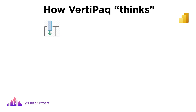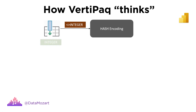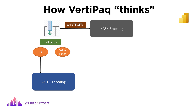Let me briefly walk through the process of data compression for a specific column — or how VertiPaq thinks. First, VertiPaq scans a sample of rows from the column. If the column data type is not an integer, it uses hash encoding. If the column is integer, additional parameters are evaluated: if the numbers linearly increase, VertiPaq assumes it is probably a primary key column and chooses value encoding. If the numbers are reasonably close to each other — like phone calls ranging from 4,000 to 5,000 — VertiPaq uses value encoding. If values fluctuate significantly, for example between 1,000 and 1 million, VertiPaq applies the hash algorithm instead.